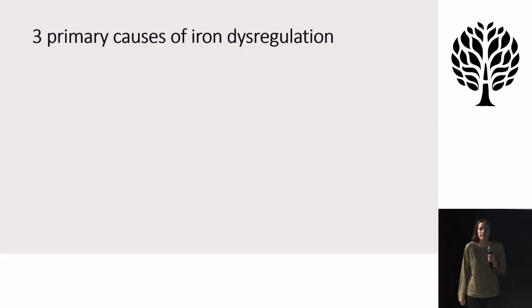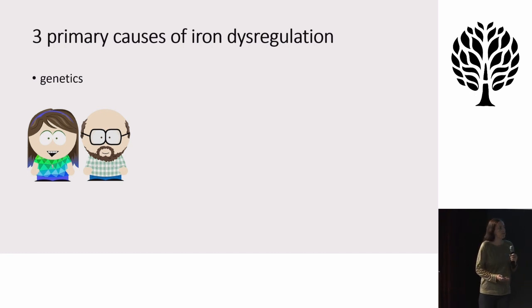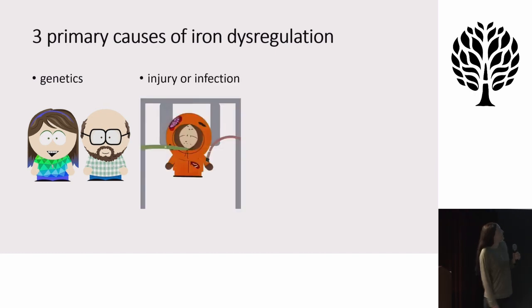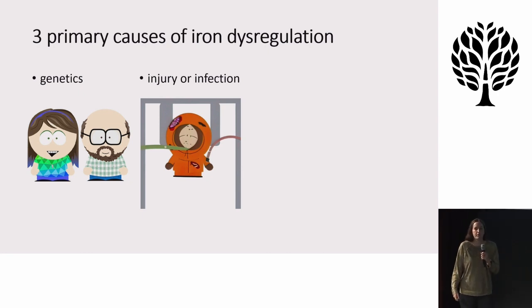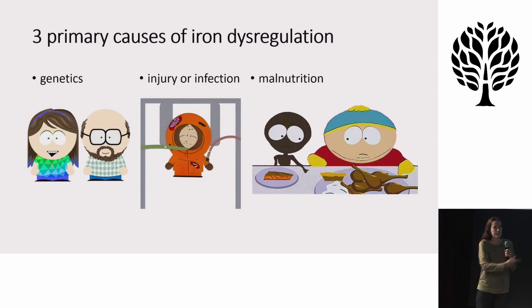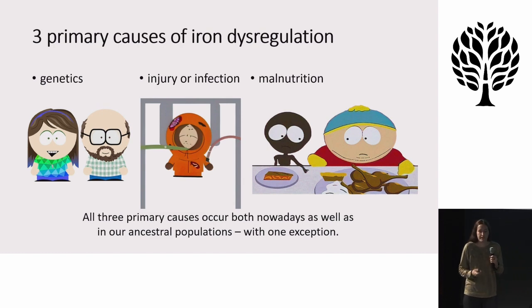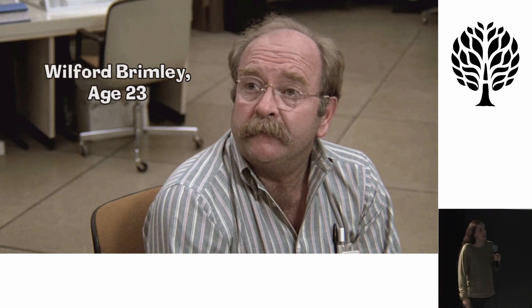There are three primary causes of iron dysregulation. First: genetics — your body can be genetically predisposed to absorbing too much iron (iron overload) or too little. Second: injury or illness, which can be anything from trauma to bacterial, viral, or parasitic infections. Third: malnutrition — excess or inadequacy in your diet. All three causes occur today and also occurred in ancestral populations, with one exception: a particular dietary excess. No matter the cause, iron dysregulation can really run havoc on the body.